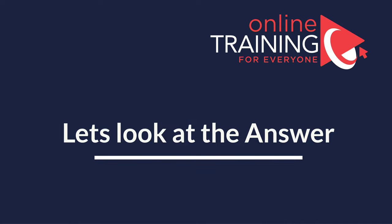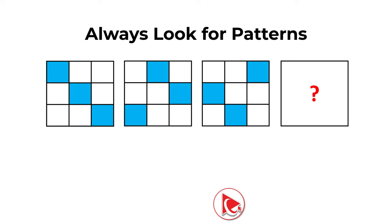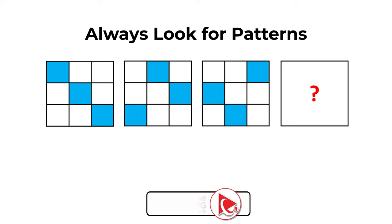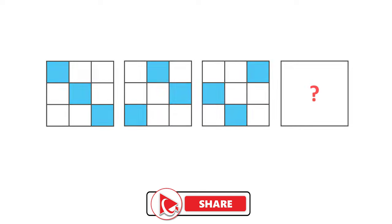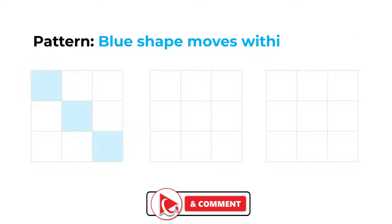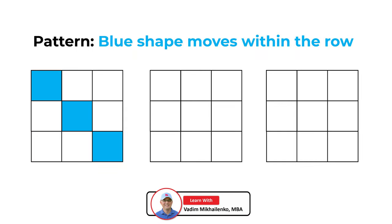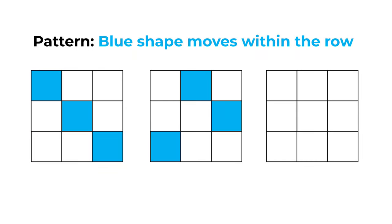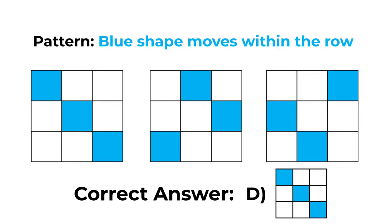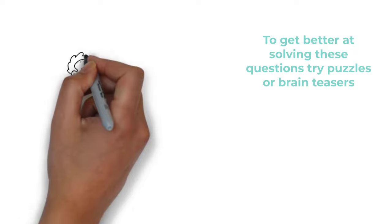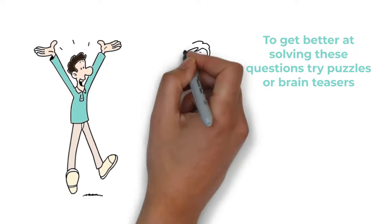The key is to look for patterns. The blue shape moves within each row of the larger shape from left to right, one step at a time. Once it reaches the right end, it reappears on the left. So the correct answer is choice D.